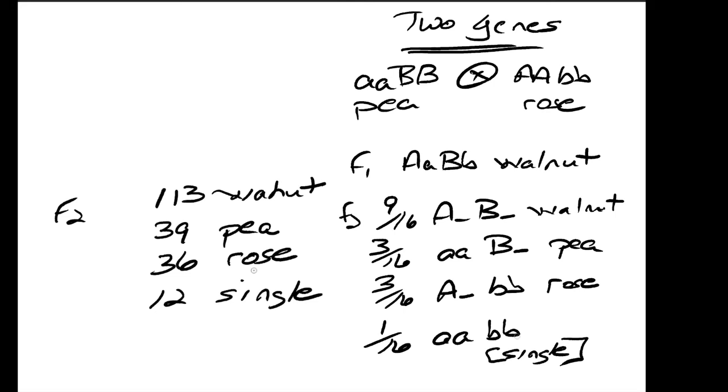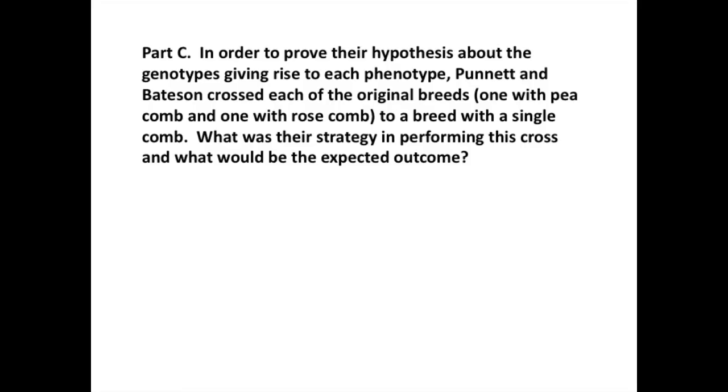Now let's move to the next part C. In order to prove their hypothesis about the genotypes giving rise to each phenotype, Punnett and Bateson crossed each of the original breeds, one with pea comb and one with rose comb, to a breed with a single comb. What was their strategy in performing this cross, and what would be the expected outcome?